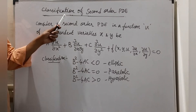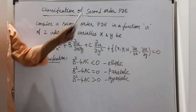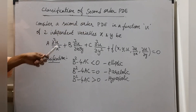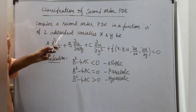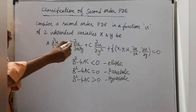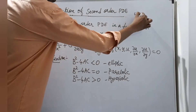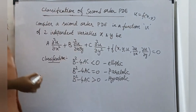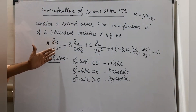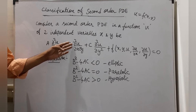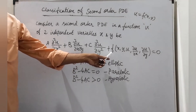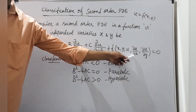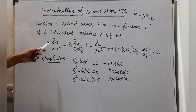Hi friends, now we are going to see the classification of second order partial differential equations. Consider a second order partial differential equation in a function u with independent variables x and y: A times dou²u/dou x² plus B times dou²u/dou x dou y plus C times dou²u/dou y² plus a function of x, y, u, dou u/dou x, dou u/dou y equals zero. We are going to classify this partial differential equation.